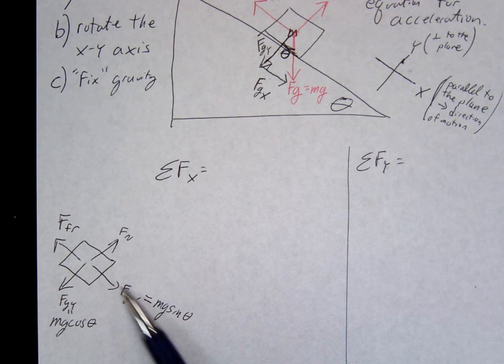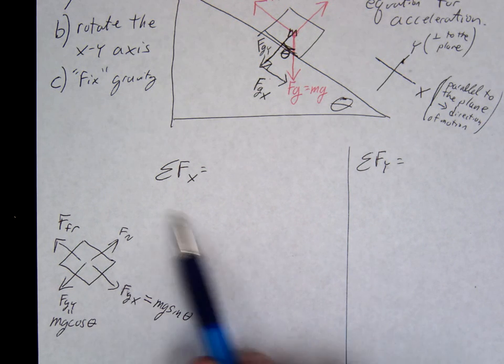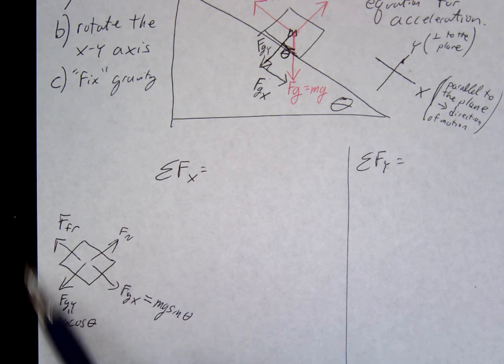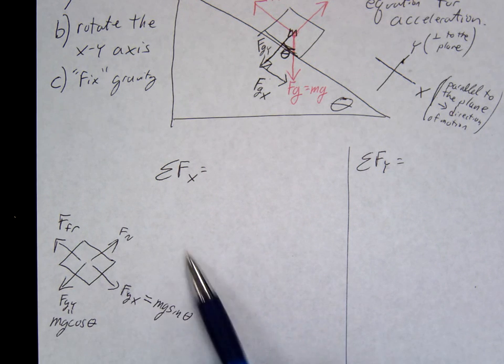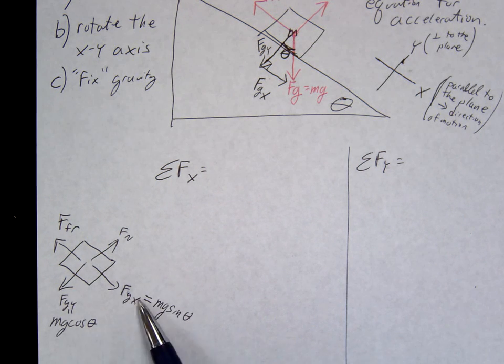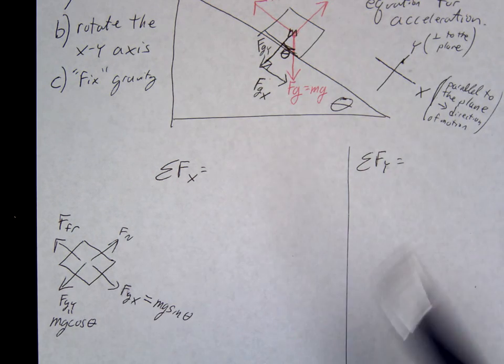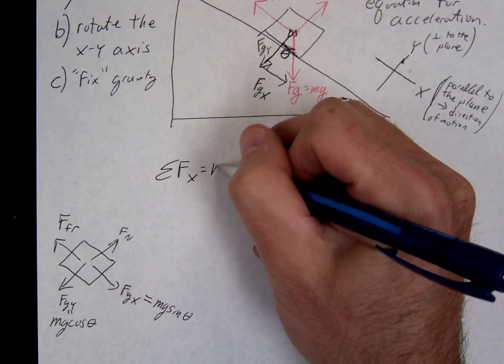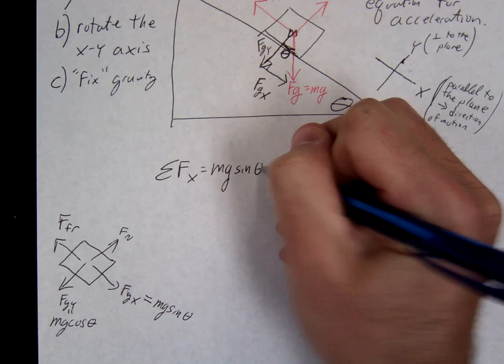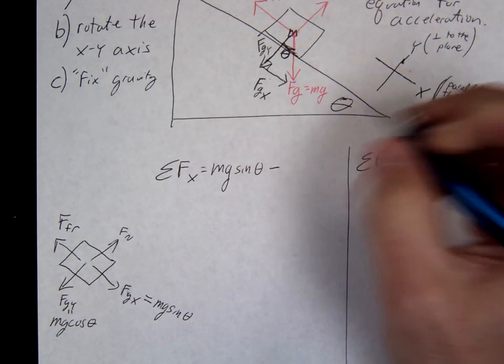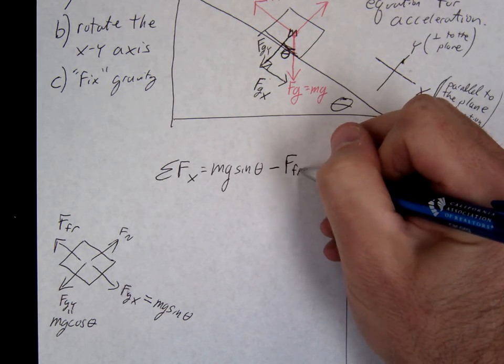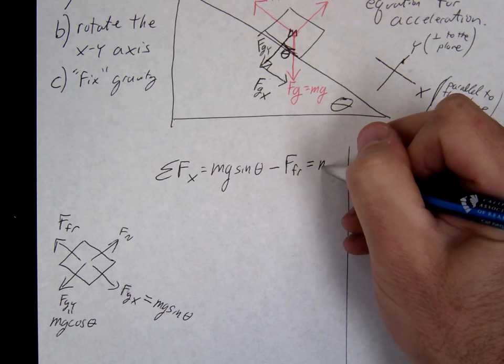So let's do our X equation here. What do we have on our X? Well, at this point, it should be easy. This is the hardest part, and it is hard the first few times you do it to get to this point. But once you've gotten to this, then it's straightforward. It's everything we've been doing. So for example, in the X direction, we would write this as M, G, sine theta, minus force of friction, equals M, A, X.